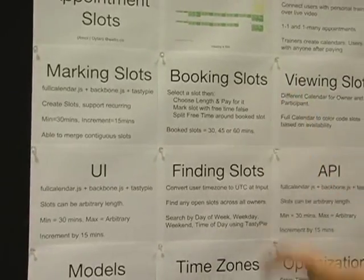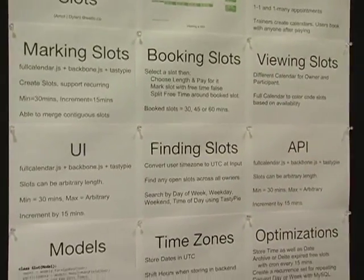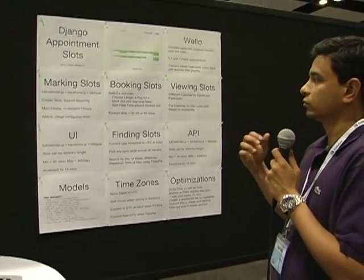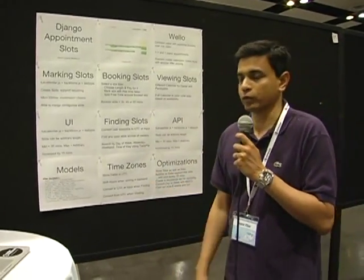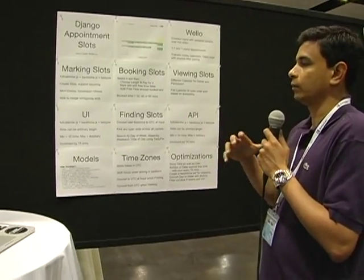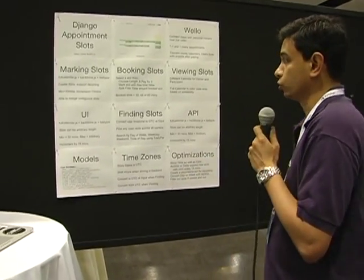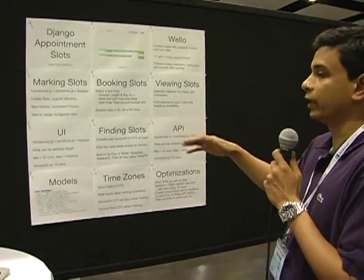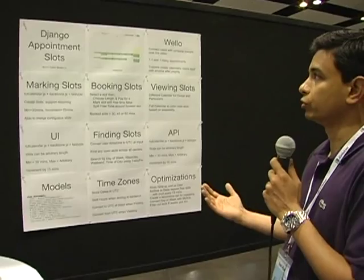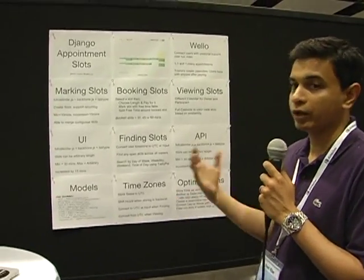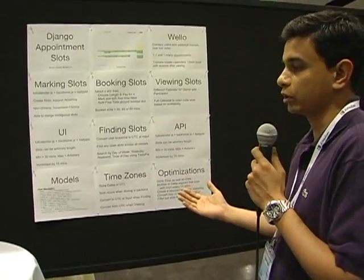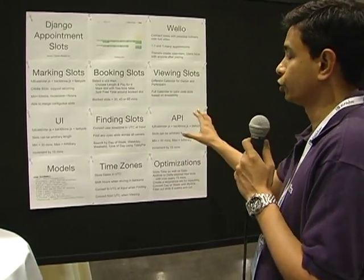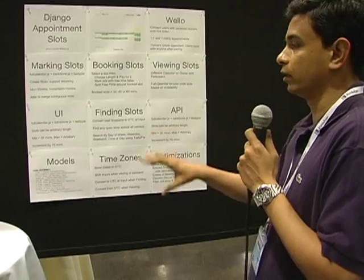When it comes to booking slots, we allow people to select a slot, choose the length, and actually pay for it — which most other marketplaces would also need. When it comes to viewing slots, we get a different calendar based on who the user is. If you're a trainer, you get a different view, and if you're a user who's just trying to book a slot, you get a different view. I can show a bit of all of this in a demo at the end.